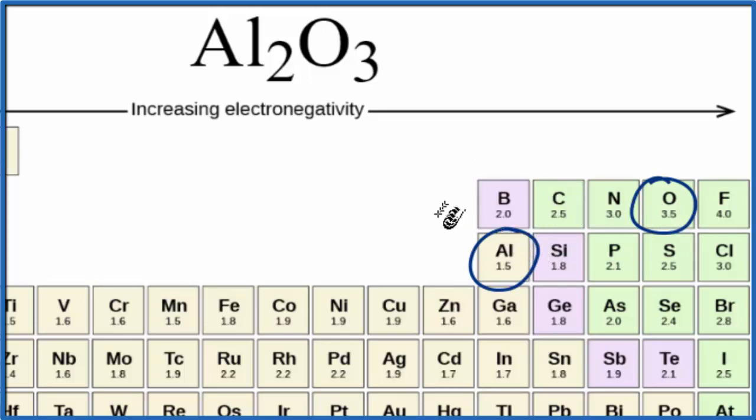And by definition, for many textbooks, 2.0 and above is an ionic compound. Some textbooks even say 1.7 and above. So Al2O3 aluminum oxide is an ionic compound. This is Dr. B, and thanks for watching.